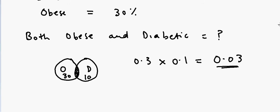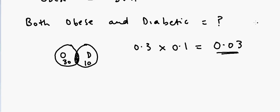So now if I ask you the question, what is the probability that a person is both obese and diabetic? So that will be equal to 0.03. But if I put an 'or' here—what will happen if the person can be obese or can be diabetic? So what's the probability for that?